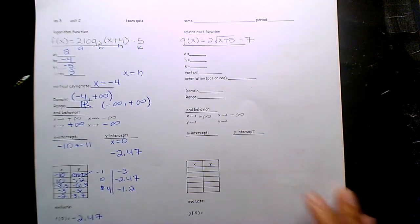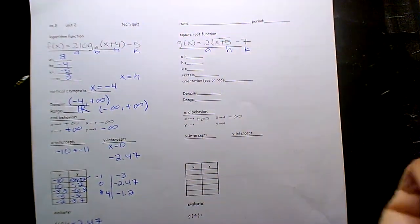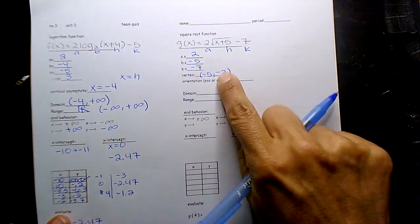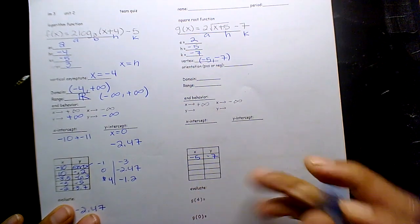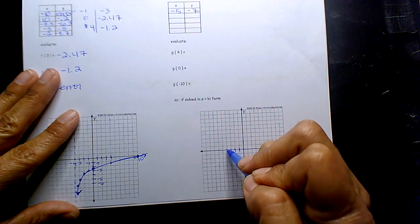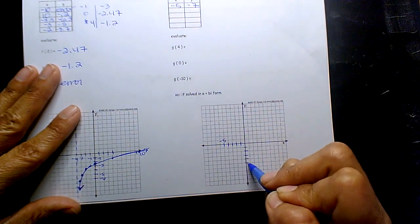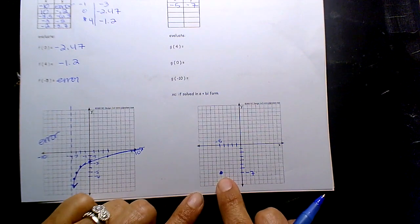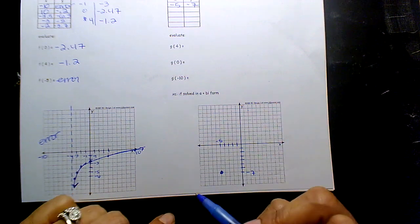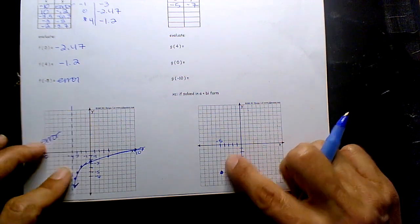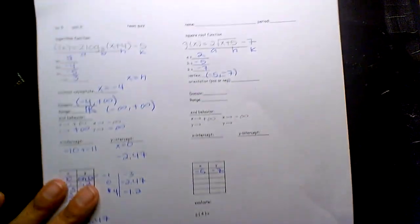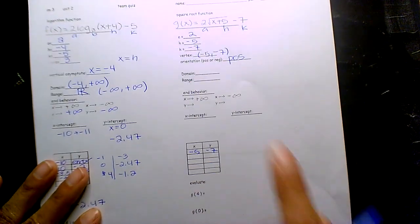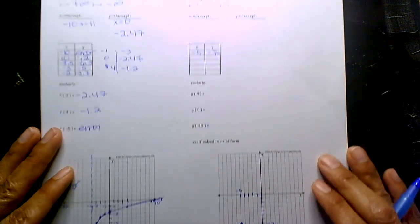The square root function — here's your A, H, K, right? So it's 2, opposite H again, negative 5, negative 7. So negative 5, negative 7 is that starting point. I'm going to plug that in the first slot — 1, 2, 3, 4, 5, negative 5 — and 1, 2, 3, 4, 5, 6, 7, negative 7. Plot that, and that's my starting point. There is no asymptote here. The A is positive, so it's going to go this way. So let's get to our table.